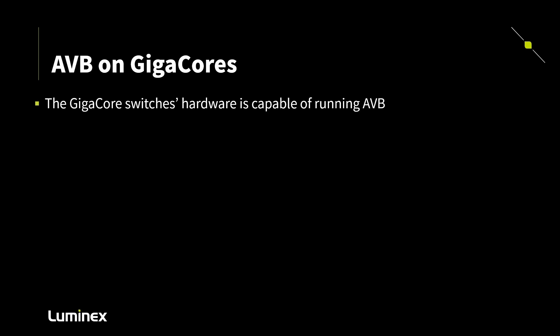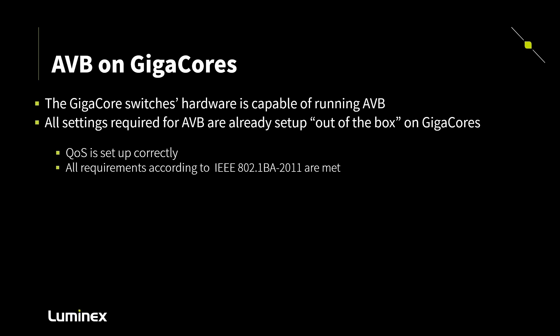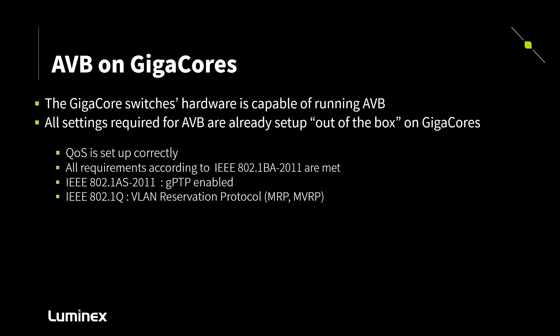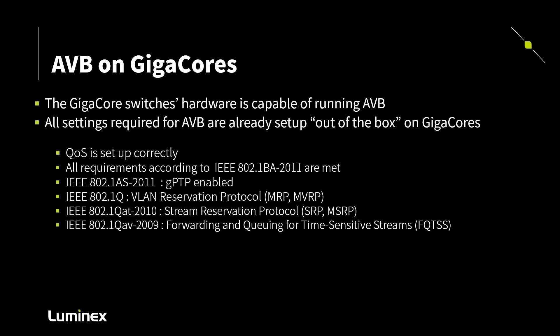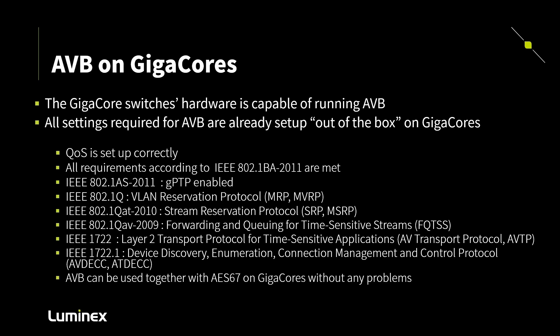Using AVB on GigaCores is quite easy. To start off with, the switch's hardware supports AVB. No settings are required for AVB as the switches are pre-configured out of the box. All settings for GPTP, MRP, MVRP, SRP, etc. are set in the GigaCore firmware. And of course you can run AVB together with AES67 or most other audio protocols on the same GigaCore switches.